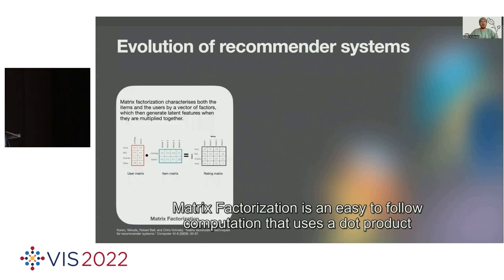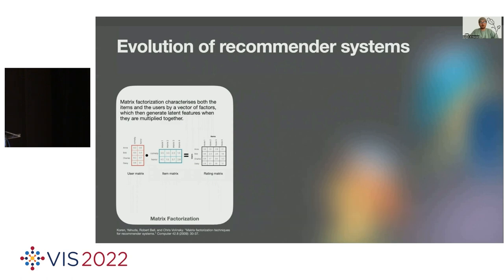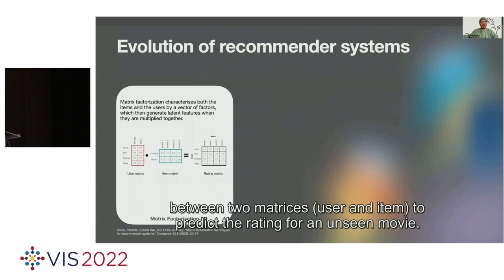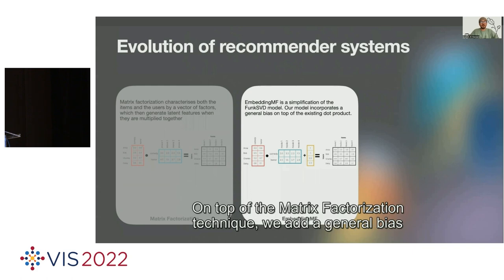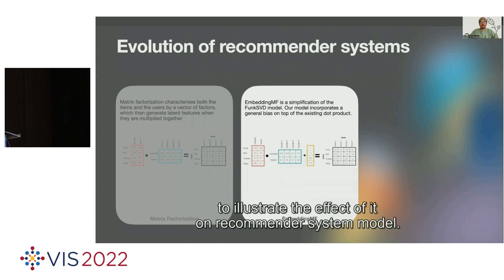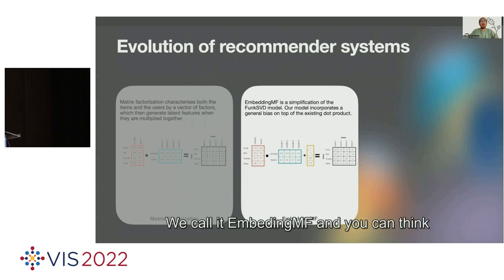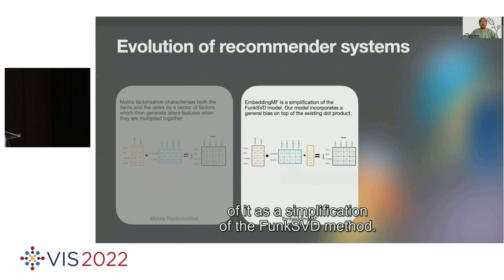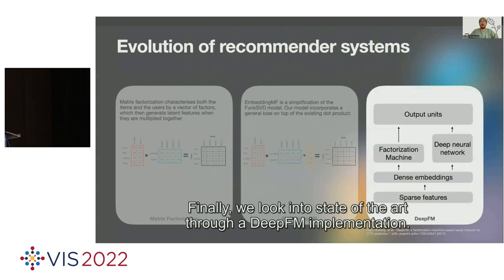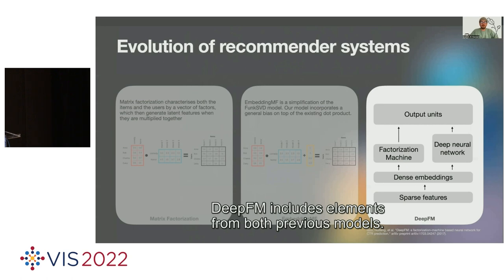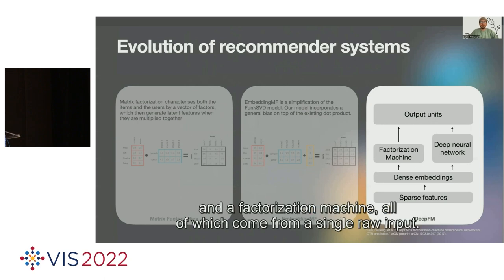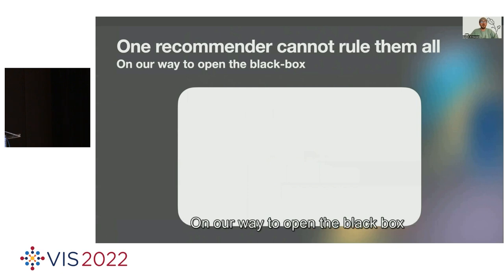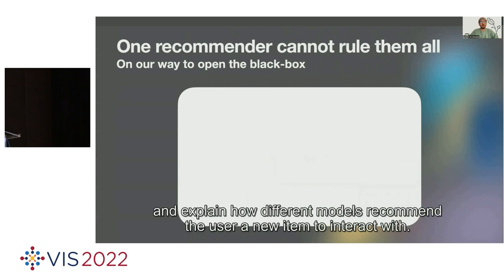Since modern recommender systems can be quite complex, we structured our submission as an educational article starting with the core technique called matrix factorization, then adding complexity to reach today's state-of-the-art. Matrix factorization uses a dot product between two matrices — user and item — to predict the rating for an unseen movie. On top of that, we add a general bias, calling it EmbeddingMF, a simplification of the Funk SVD method. Finally, we look into state-of-the-art through a DeepFM implementation, which includes an embedding layer and a factorization machine from a single row input.